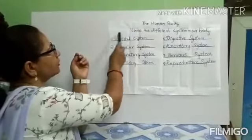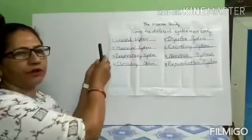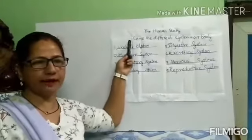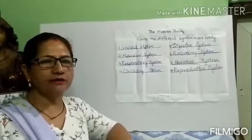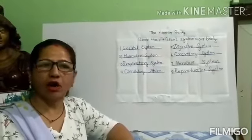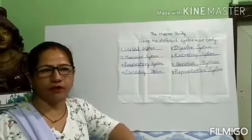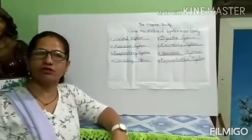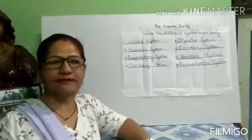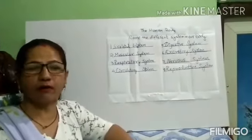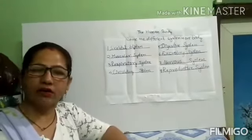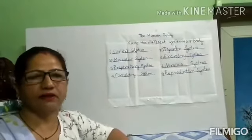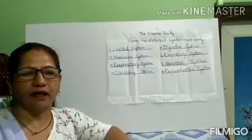Let's discuss a brief description of the skeletal system. Our bones join together to form our skeleton — this makes up the skeletal system. The bones support our body, protect our organs, and allow us to move. A good example of how bones protect our organs is the way our ribcage surrounds organs such as the heart and lungs.